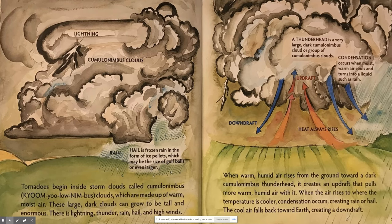Tornadoes begin inside storm clouds called cumulonimbus clouds, which are made up of warm, moist air. These large dark clouds can grow to be tall and enormous.